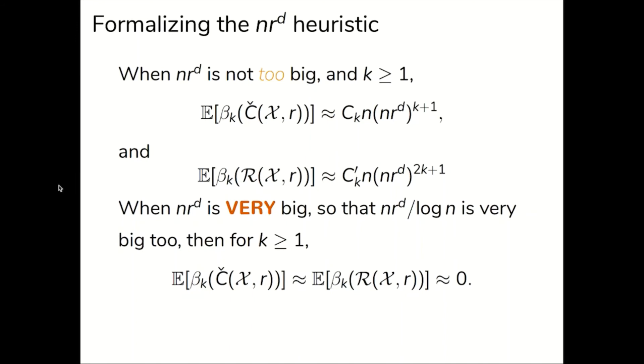Now, when nr to the d is very big, so that nr to the d over log n is very big too, then for k is greater than or equal to 1, the expected k-th Betti number in the Čech and Rips complexes is approximately zero for large n.